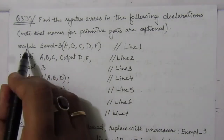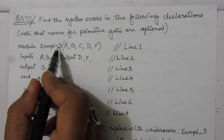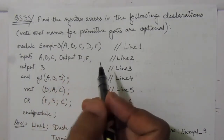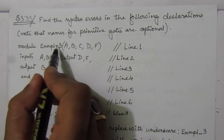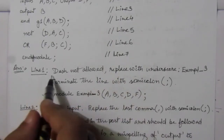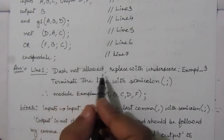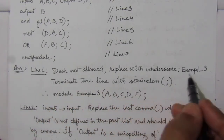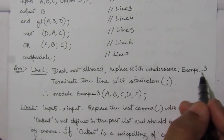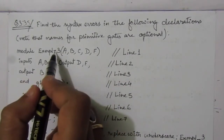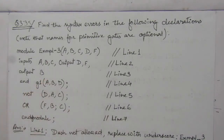In the first line, we can see that it is: module example-3, A, B, C — these are the ports declaration. We can see that this dash is not allowed. So we have to replace it with an underscore, meaning we have to write exmpl_3.